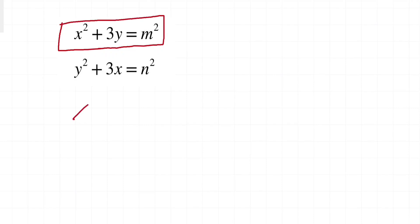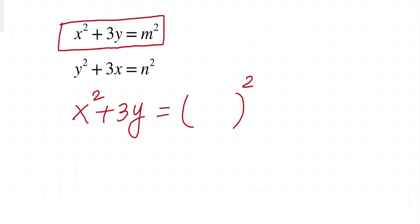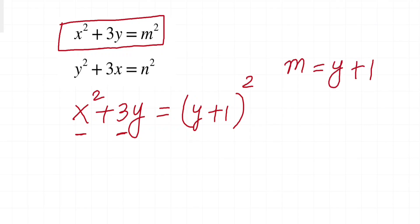I take x² + 3y and our aim is to find a perfect square. I'll try to put something inside a bracket so that I can cancel some terms — either x² or 3y. I will take m = y + 1. I've chosen y + 1 in such a way that it will cancel some terms and help us complete the square.